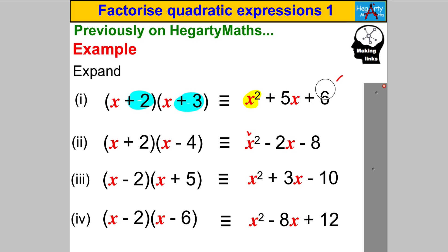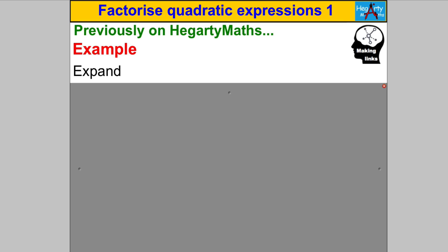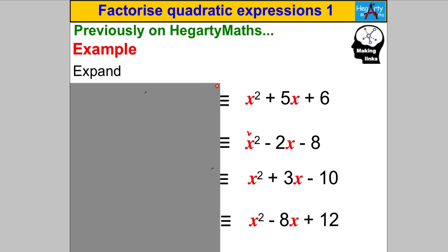Since factorizing is going backwards, if I cover the brackets and just reveal the expanded form, you know that the middle term's coefficient comes from two numbers adding, and those same two numbers must multiply to give the constant. So the question you're asking yourself is: find two numbers that have a sum of 5 and a product of 6.